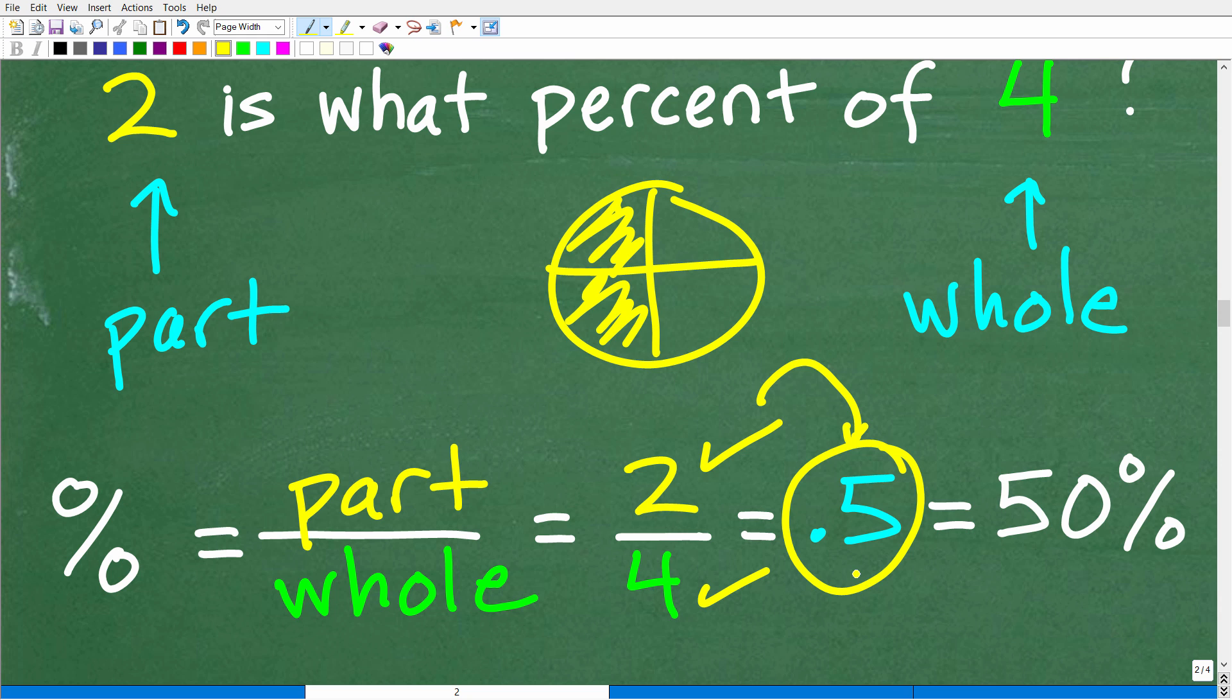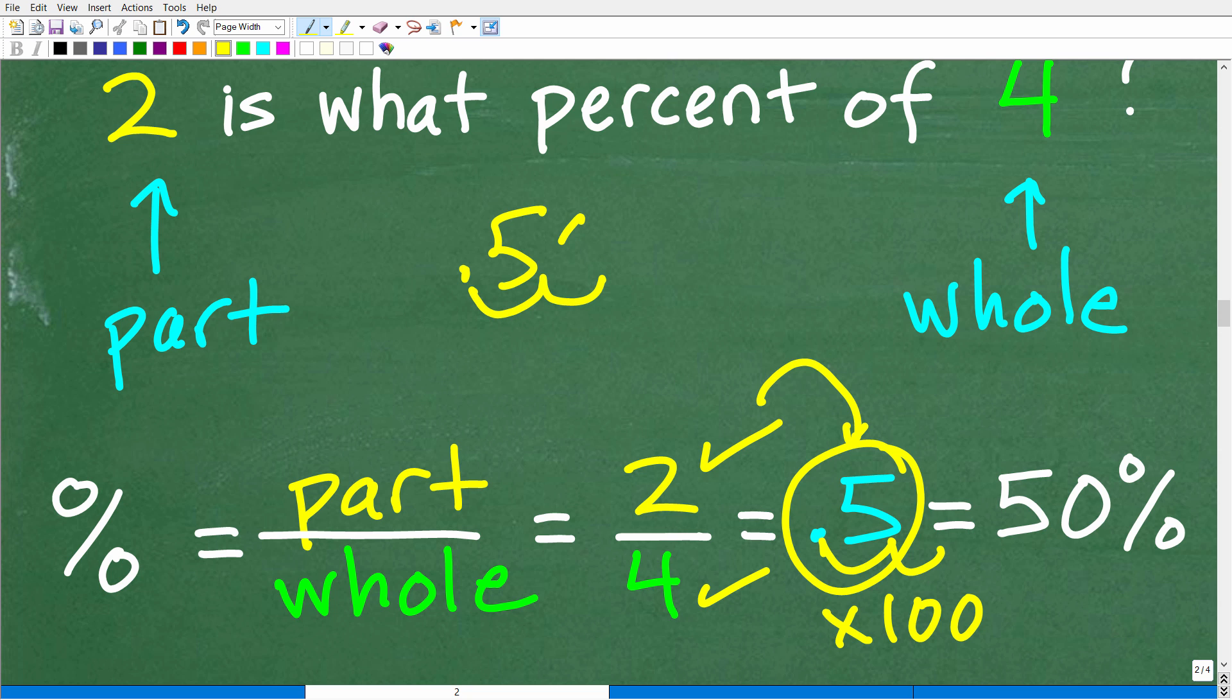So if I have 0.5 and I move the decimal point over two places to the right, so that'll be one and two, it's going to be 50.0%. So two is what percent of four? 50%. All right, so now that we understand that, all we have to do is simply apply the same setup to our problem.